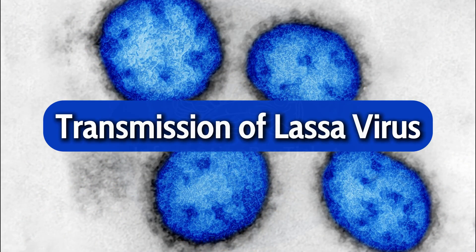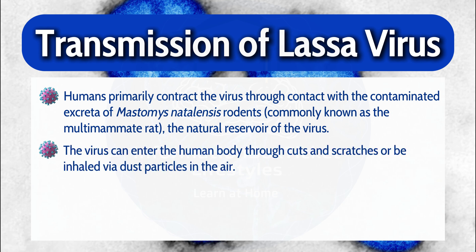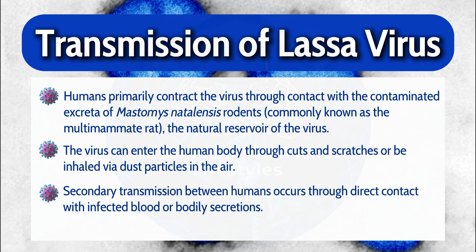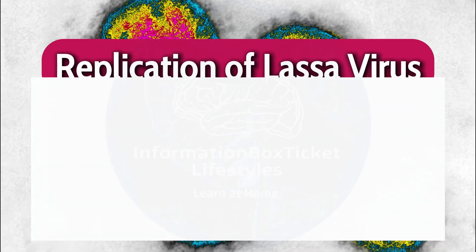Transmission of Lassa Virus. Humans primarily contract the virus through contact with the contaminated excreta of Mastomys natalensis rodents, commonly known as the multi-mammate rat, the natural reservoir of the virus. The virus can enter the human body through cuts and scratches, or be inhaled via dust particles in the air. Secondary transmission between humans occurs through direct contact with infected blood or bodily secretions.